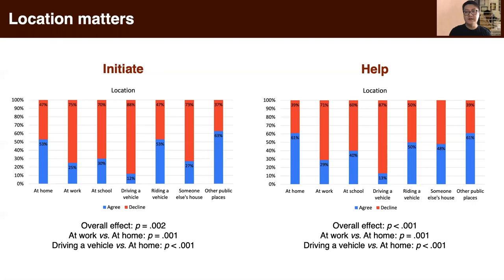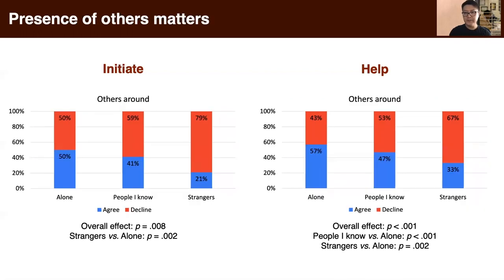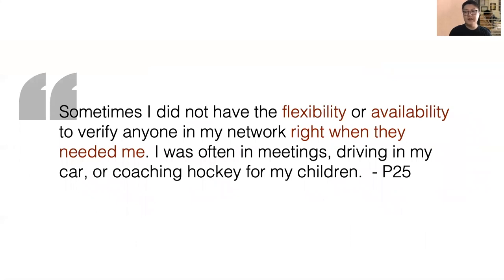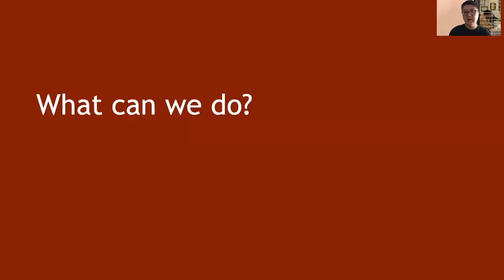Besides mood, we also found that location matters. Comparing to being at home, when participants were at work or driving, they were less likely to initiate a video chat for authentication. For the help prompt, the results were quite similar. We also found that presence of others matters: when participants were alone, they were more likely to both initiate and help. As one participant noted, they don't always have the flexibility to authenticate someone right away — they could be in meetings, driving, or doing something else that needs their full attention. It's not that participants were unwilling; it was just not the right time.